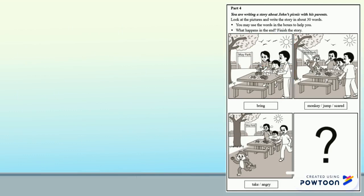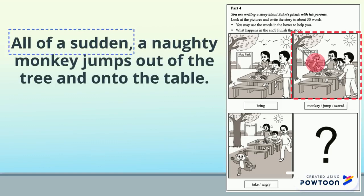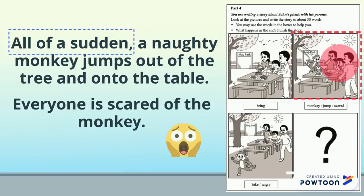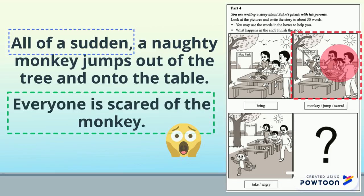Let's have a look at picture 2. Suddenly, something happens — they get a fright. So I will start my sentence by saying, all of a sudden, a naughty monkey jumps out of the tree and onto the table. Everyone is scared of the monkey. I have tried to include more by writing how they feel — what happens and then how they feel afterwards.